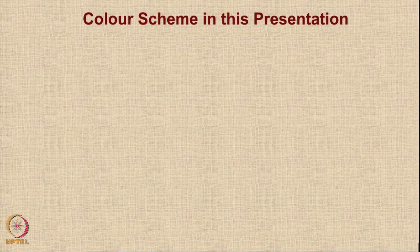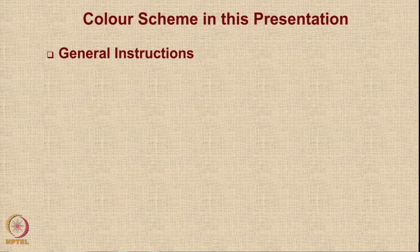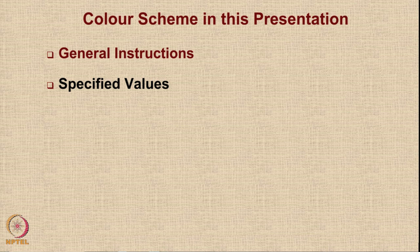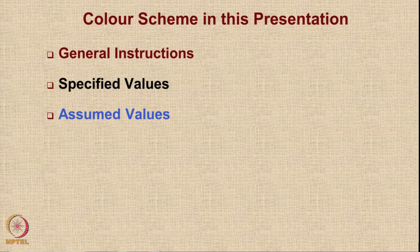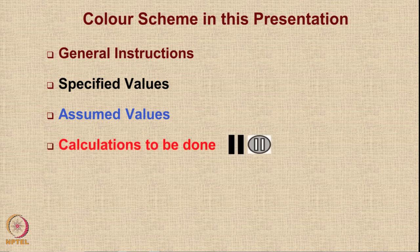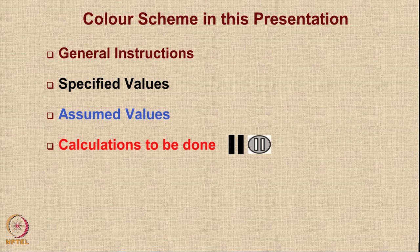I am going to follow a particular color scheme in this presentation. General instructions regarding calculations will be given in brown color. Values specified as constraint parameters will be shown in black. Values assumed based on past data about the aircraft will be shown in light blue. Places where I would like you to do calculations will use red color, followed by two vertical lines or a pause symbol — alerting you to pause the video, do calculations, and then resume.